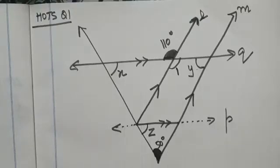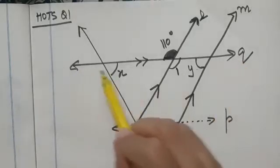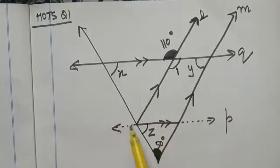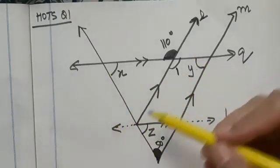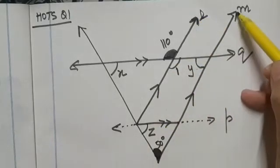Let us discuss question number 1 from HOTS of chapter parallel lines. In this figure, line Q is parallel to line P and line L is parallel to line M.